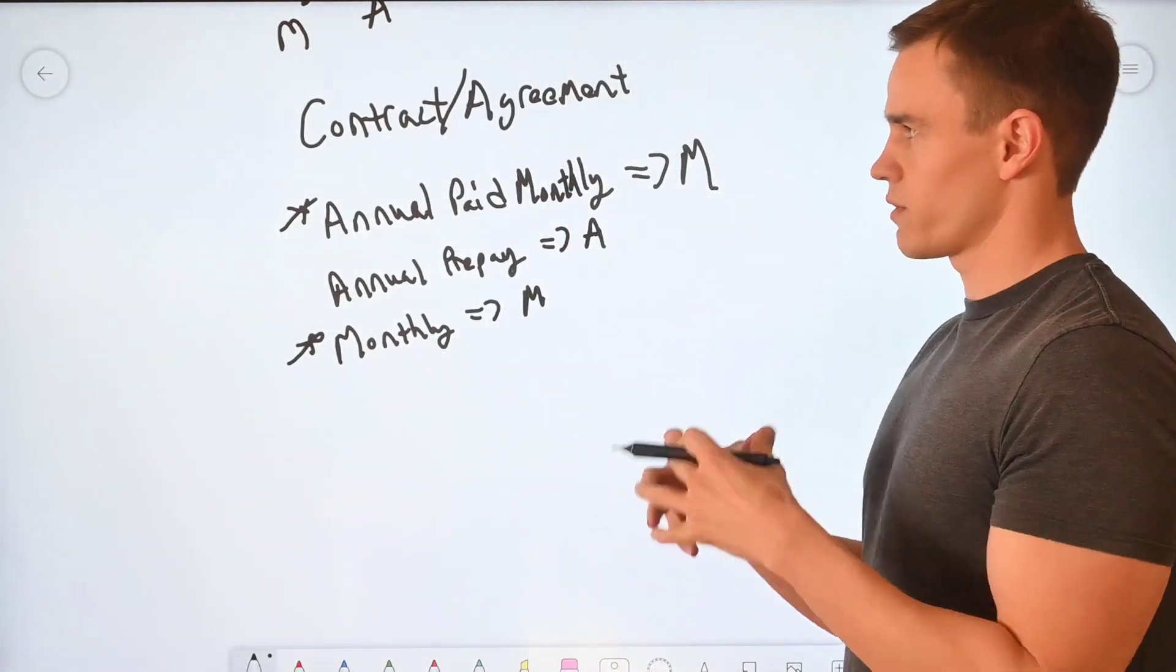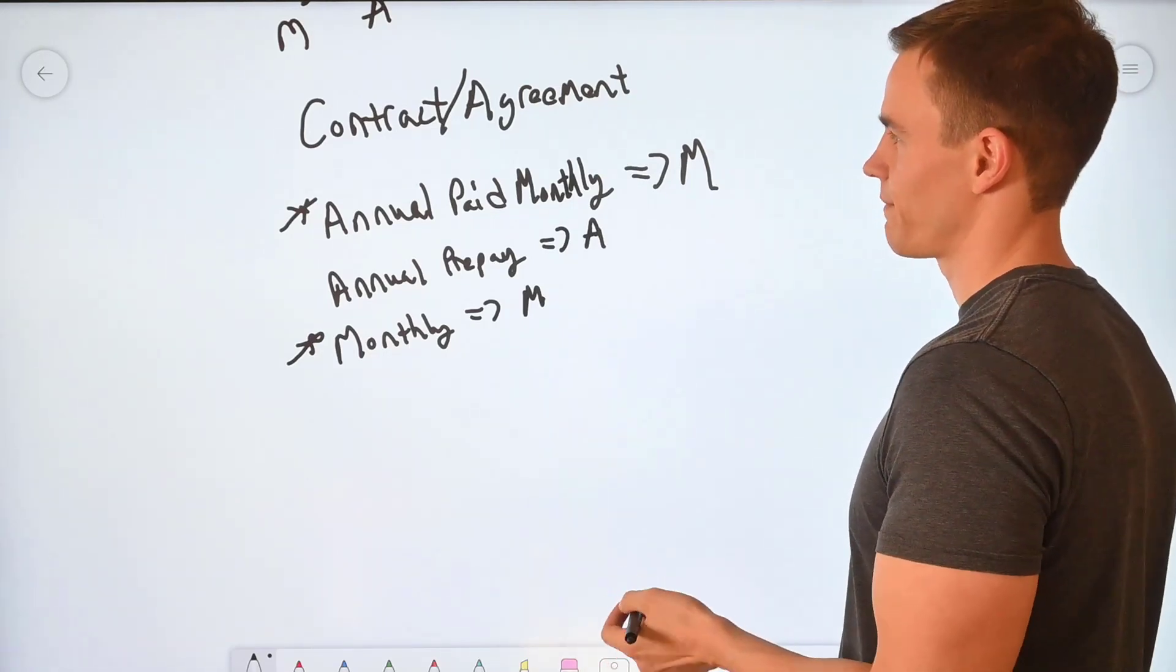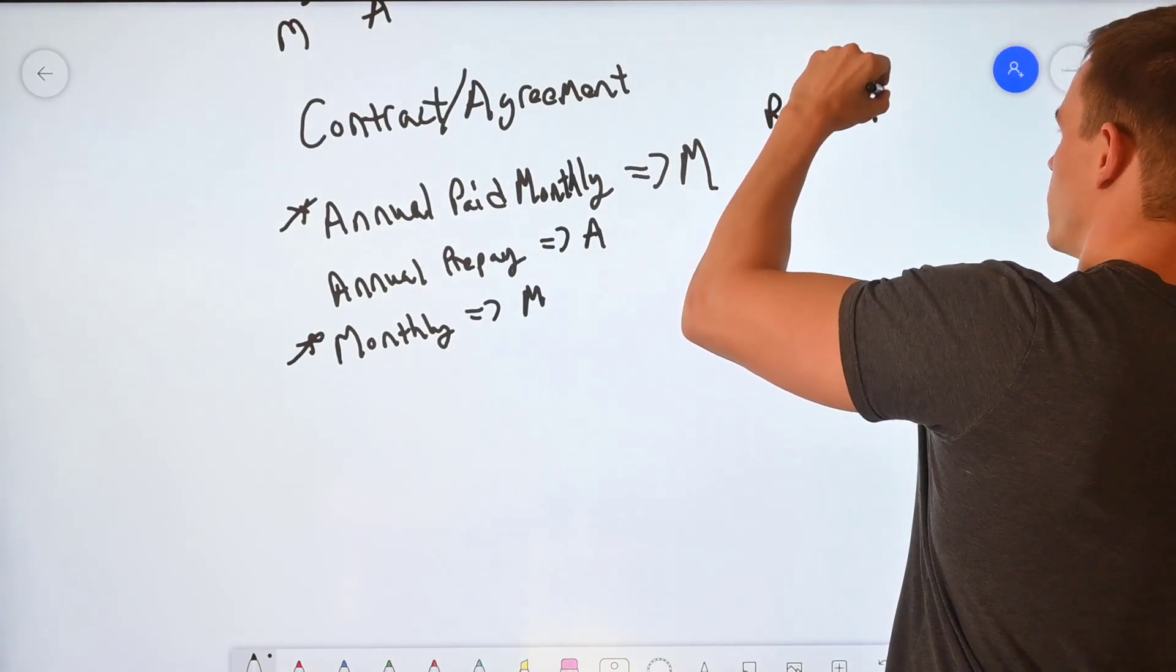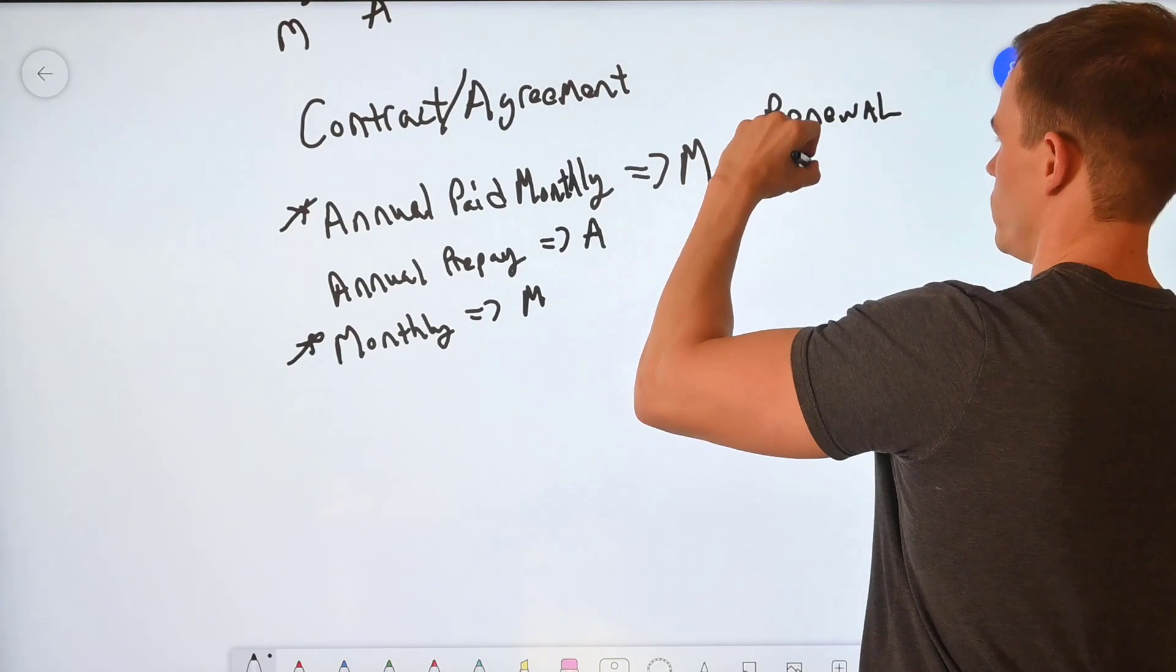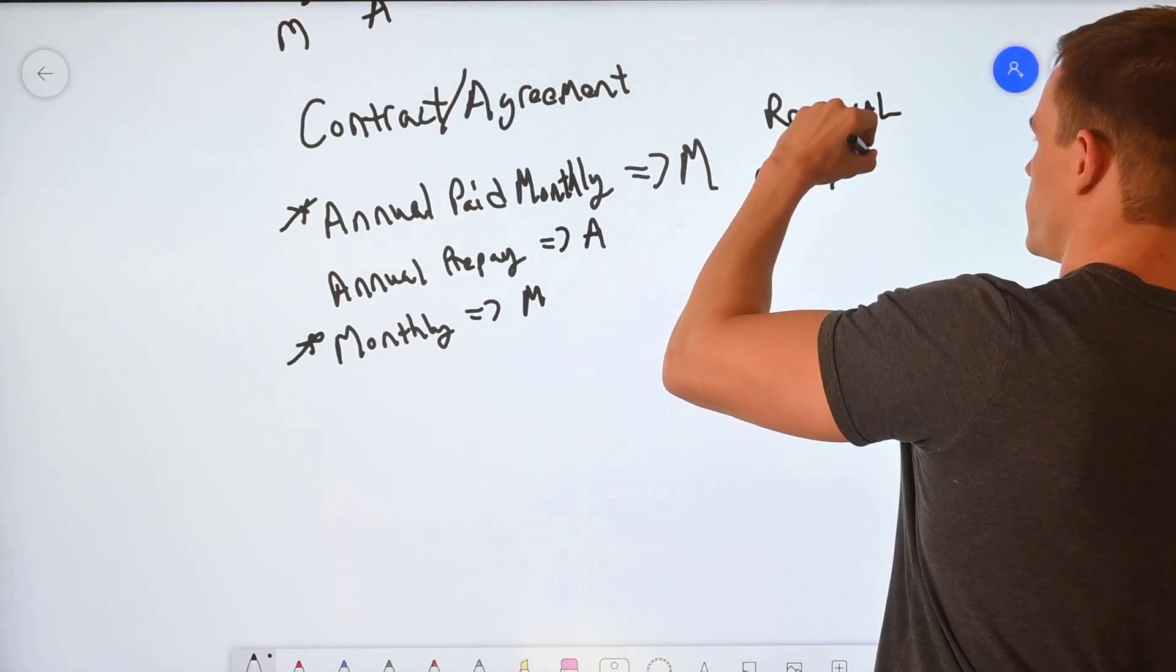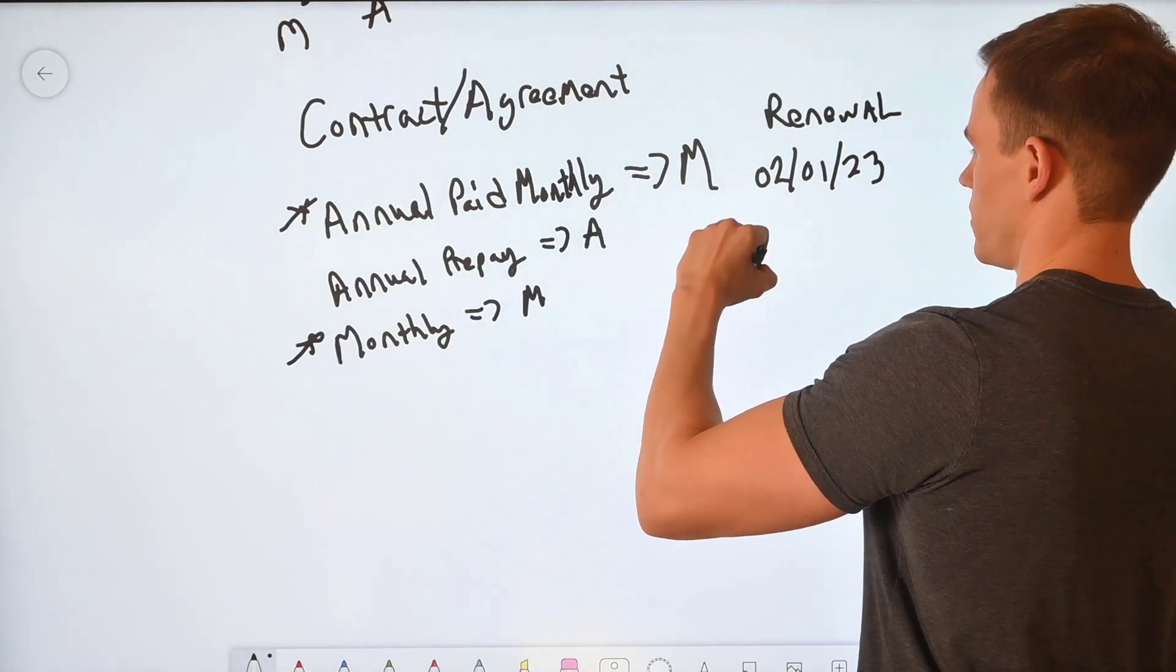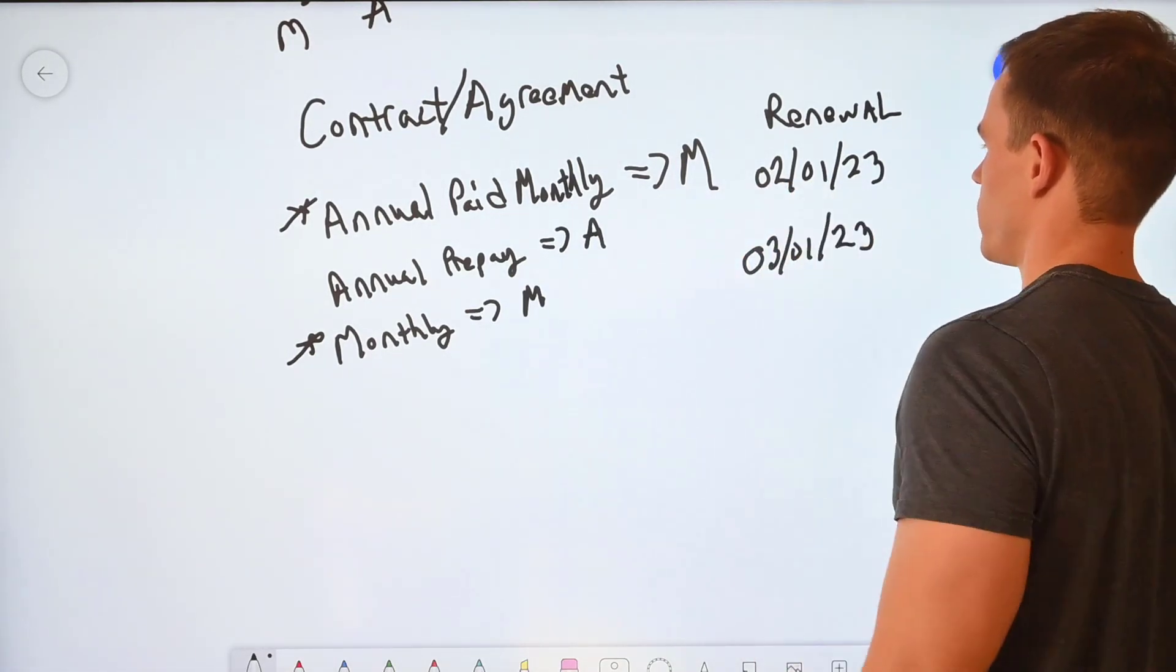Now, if we scope this down in a sense of just this one customer and these products that they're purchasing, I can still sync this and let's just say that the renewal here for this product is going to be 02-01-2023 because it's an annual.